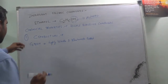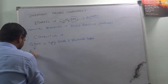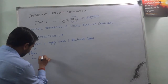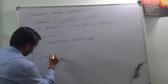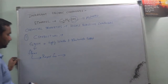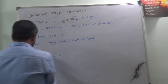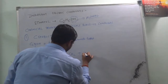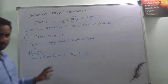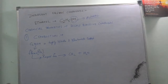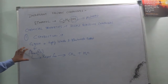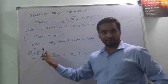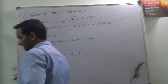When ethanol comes in contact with a flame, it catches fire rapidly. When ethanol is brought near a flame with air or oxygen present, it produces carbon dioxide and water.